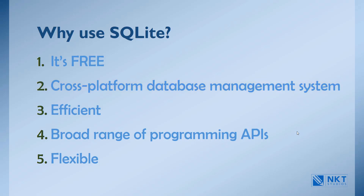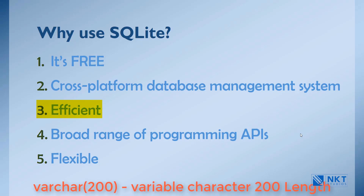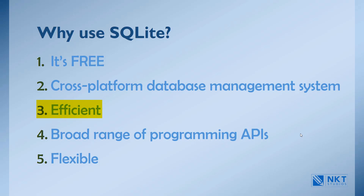SQLite offers an efficient way of storing data. The length of the columns is variable and is not fixed, so SQLite will only allocate the space that a field needs. For example, if you have a VARCHAR(200) column and you put a 10-character value in it, then SQLite will only allocate 10 characters of space for that value and not the whole 200.